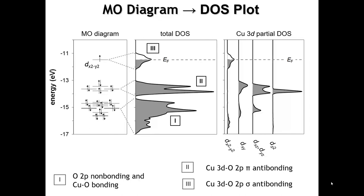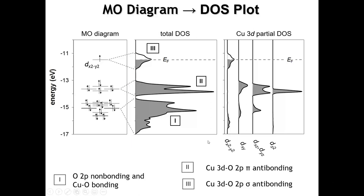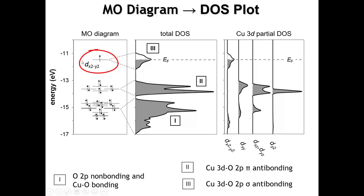The key point of this MO diagram is that the dx²-y² orbital is at a much higher energy than the other four d orbitals, because it is pointing directly at the oxygens and therefore is sigma-antibonding. Let's jump ahead to the results of the band structure calculation right here at the beginning, and then we are going to work backwards to rationalize why this band structure is what it is. The calculations are done at the extended Hückel level of theory.